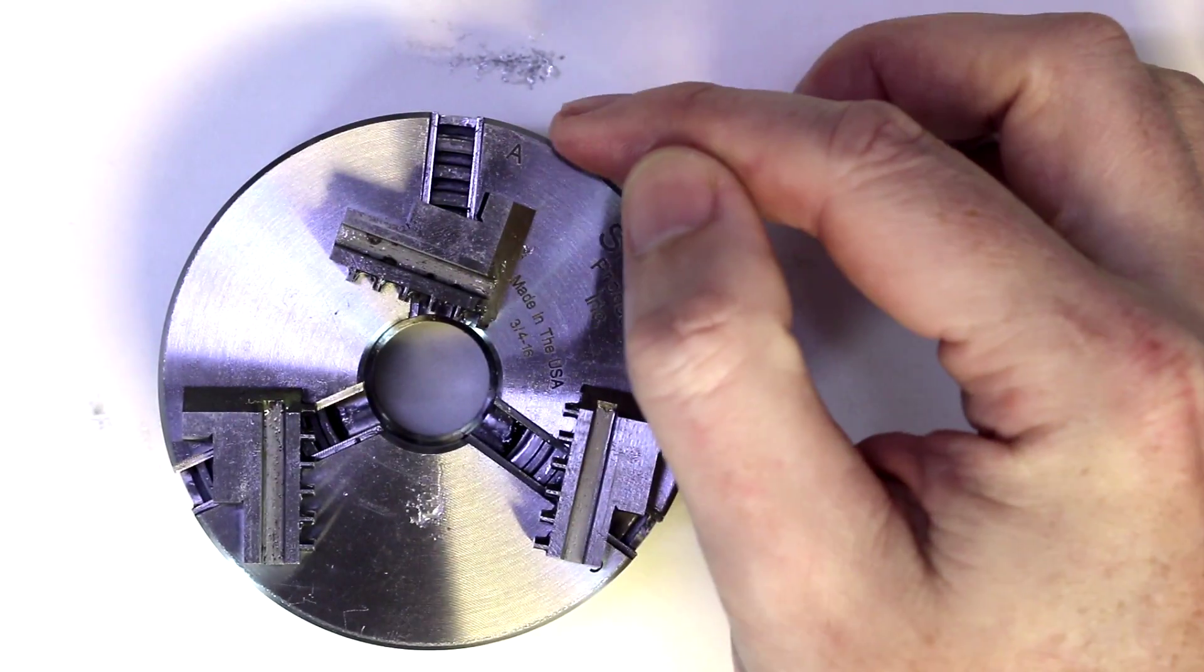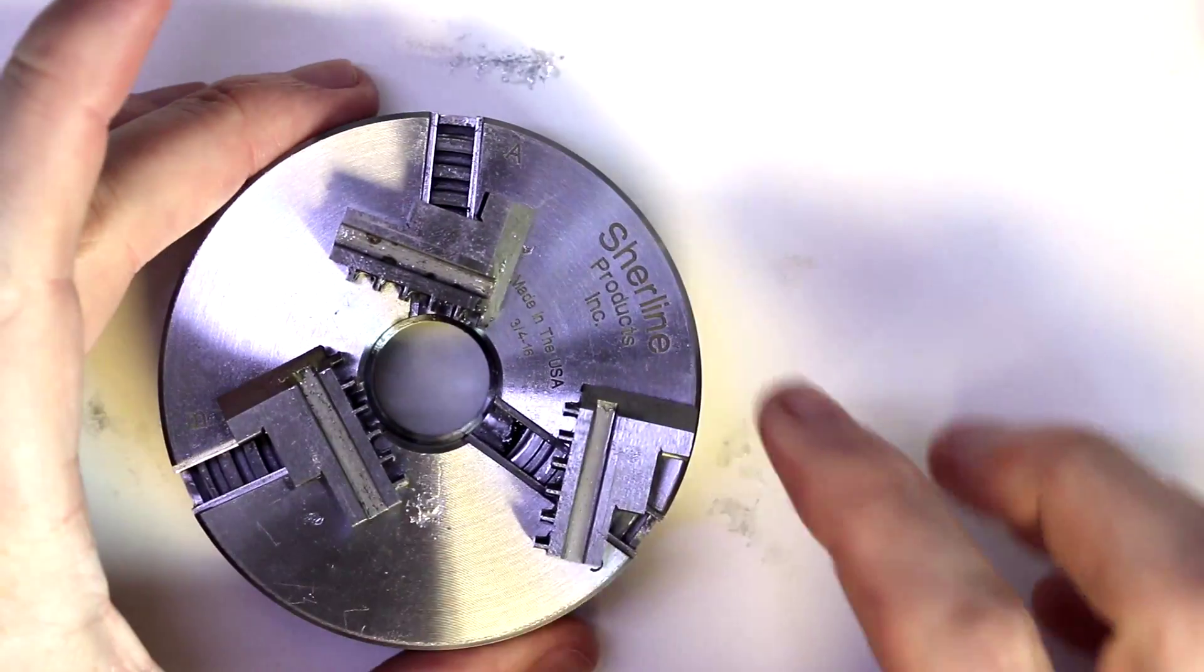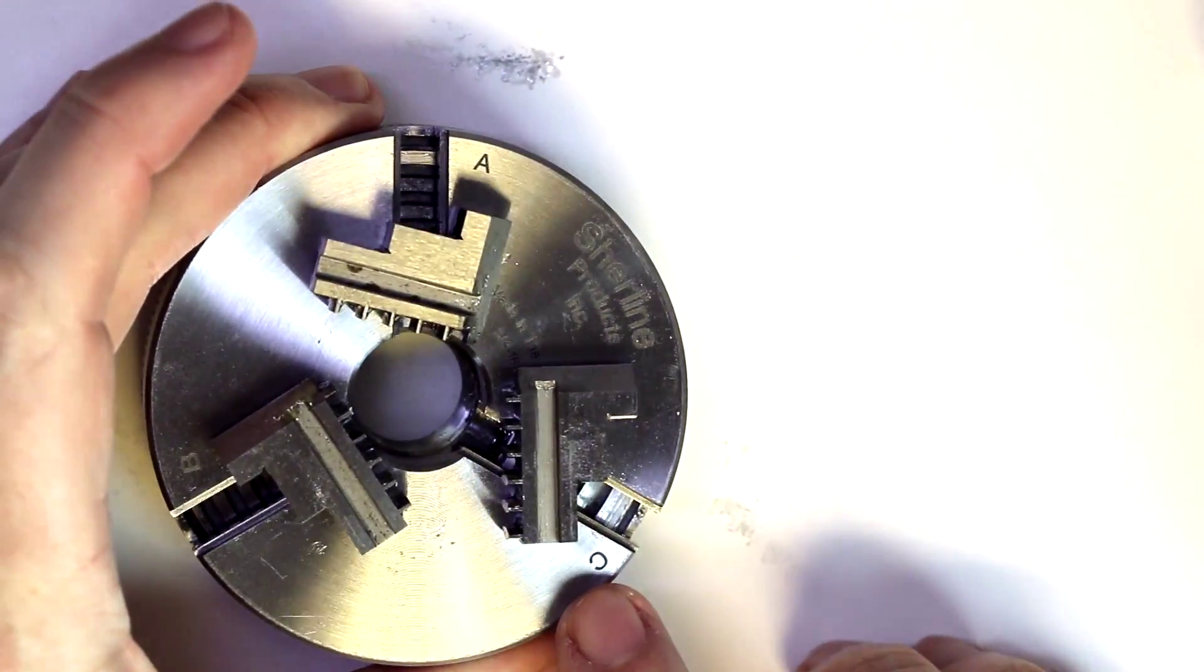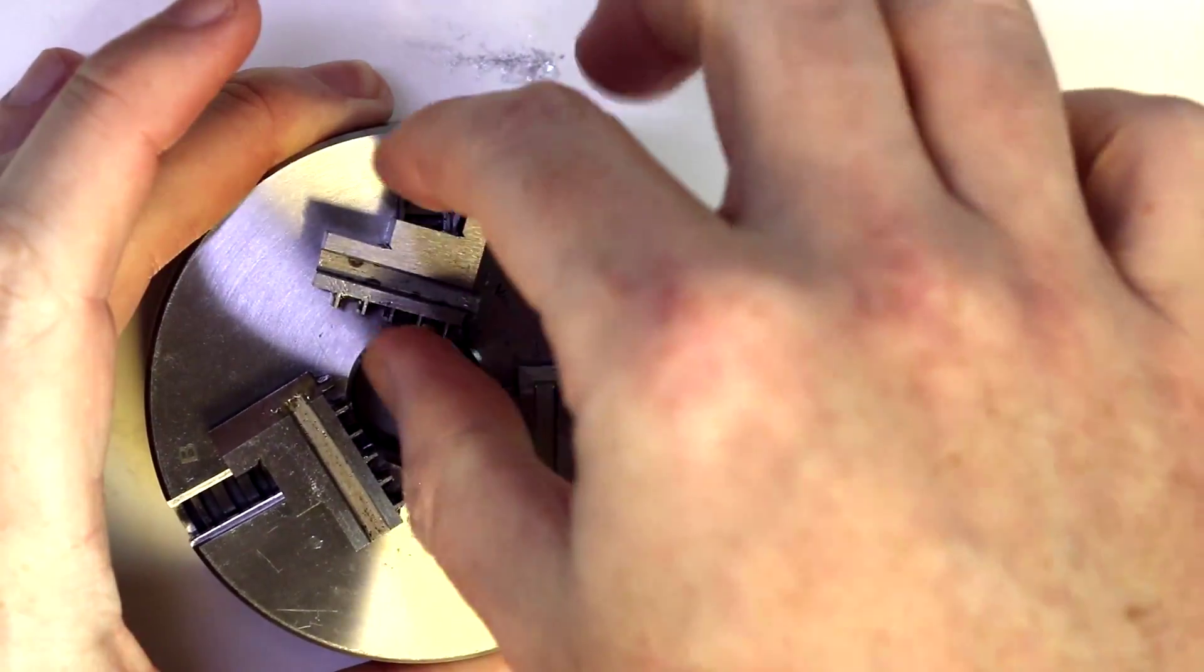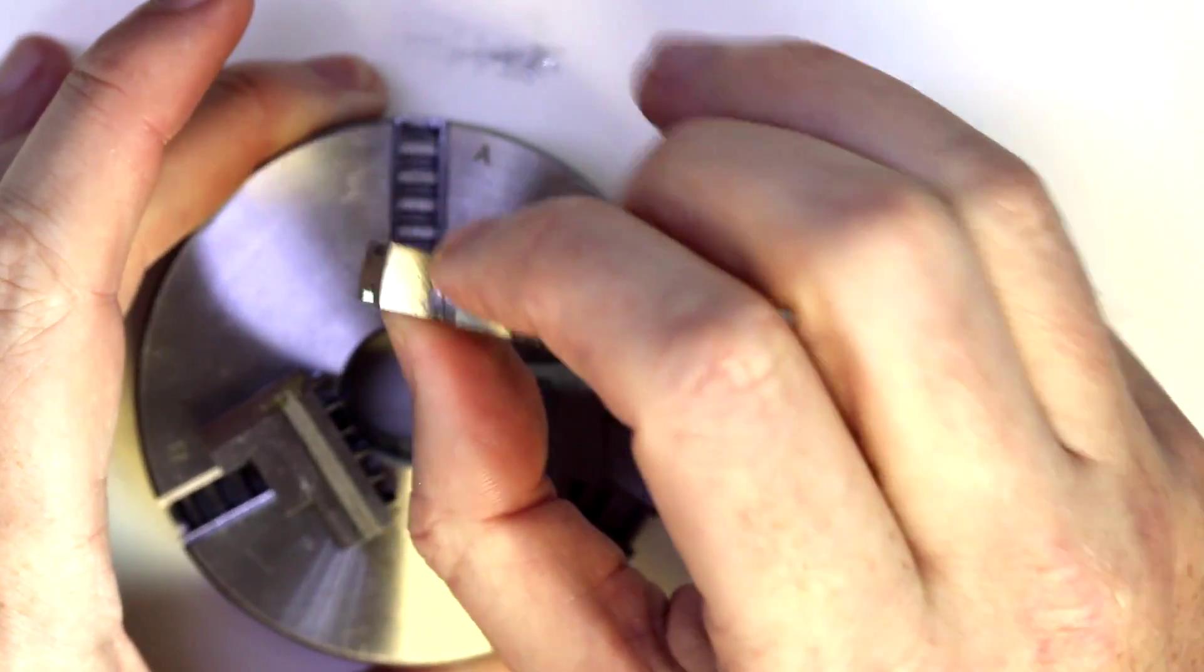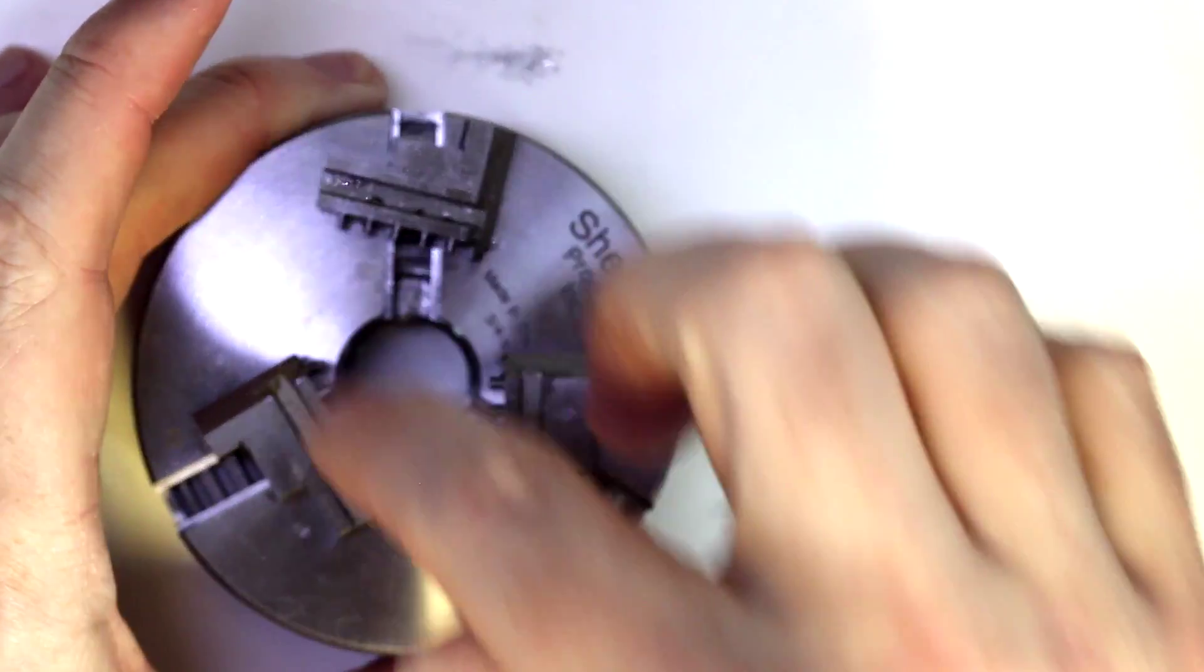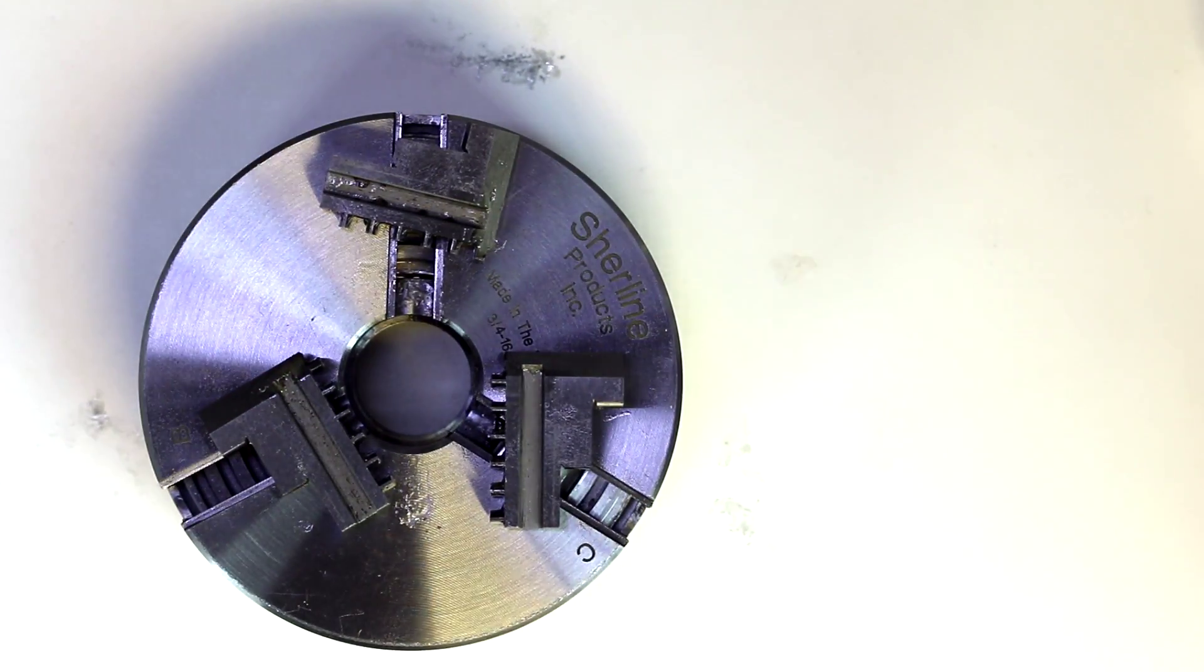You'll also see on the chuck itself lettering at each spot. So we've got an A, B, and a C. In some cases, your jaws may also be labeled A, B, and C for easier identification. I don't see any identification marks on these particular jaws, so you simply have to go off of the teeth to determine which is A, which is B, and which is C.